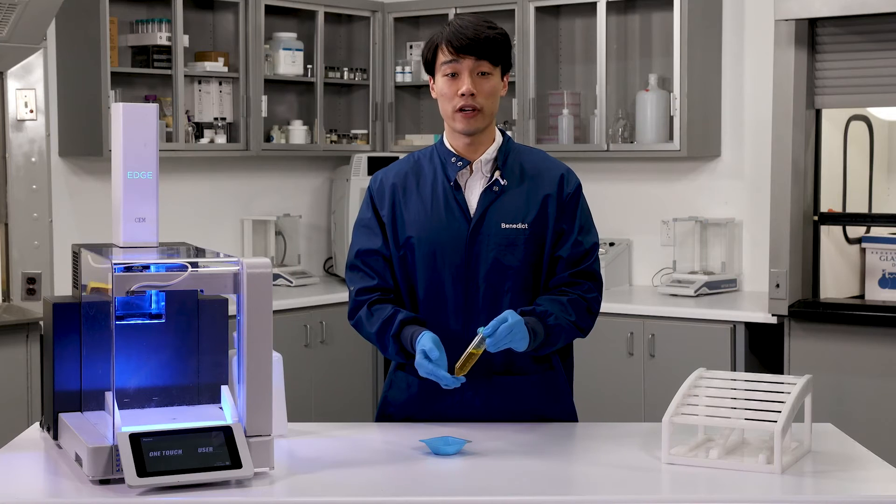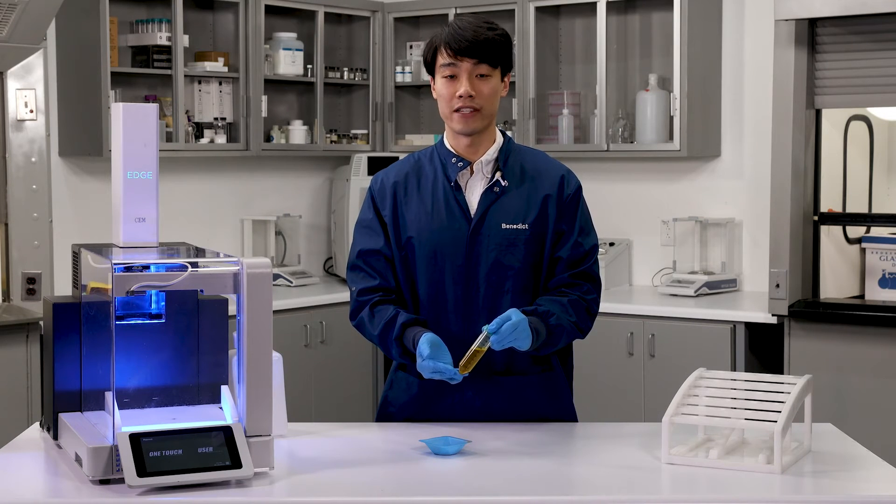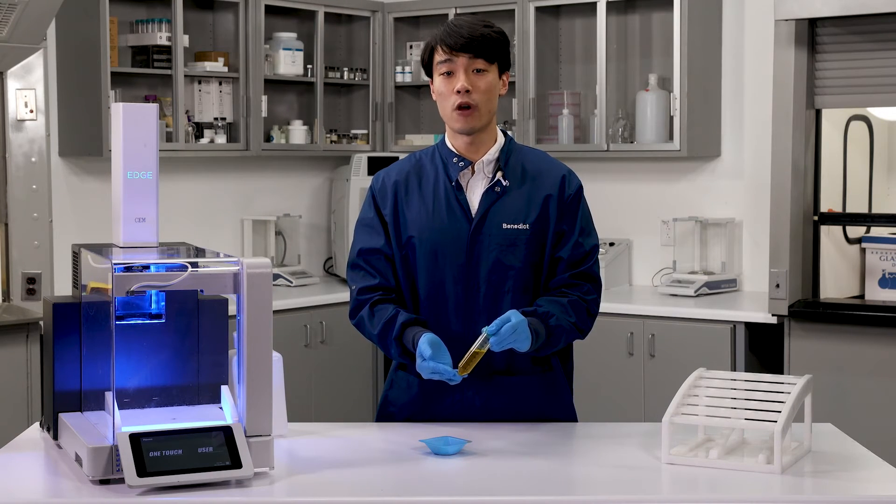Fun fact, turmeric will actually be yellow in acidic and neutral solutions, but reddish-brown in alkaline solutions. So it can be used as a rough pH indicator.